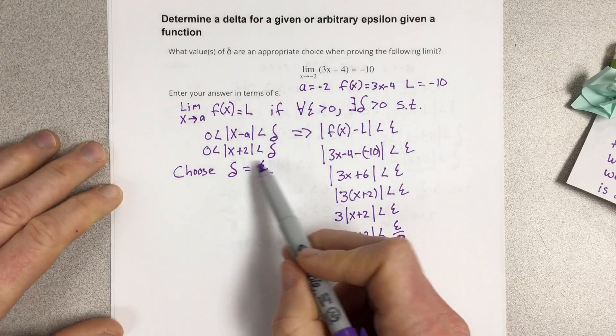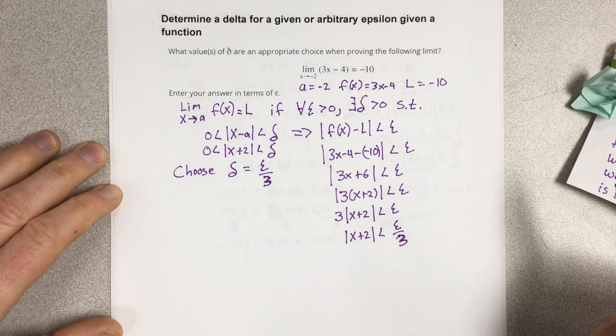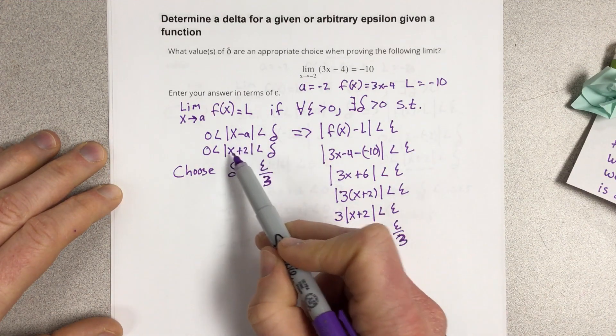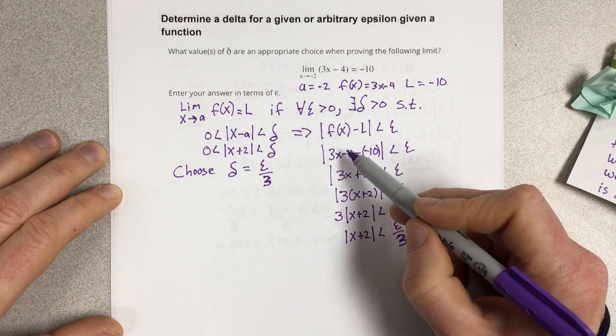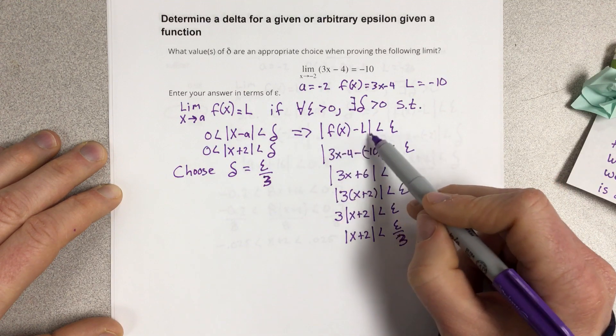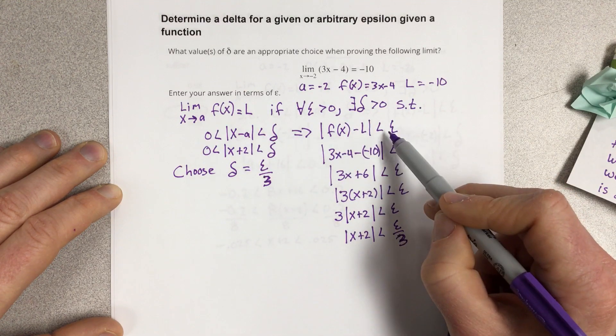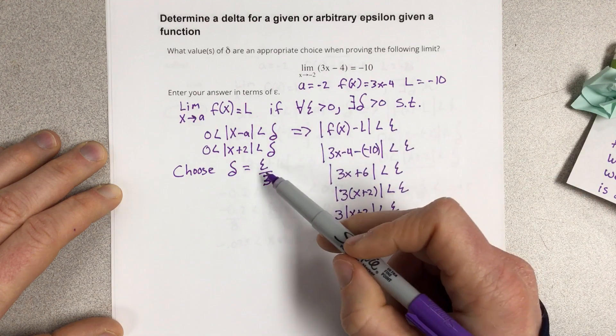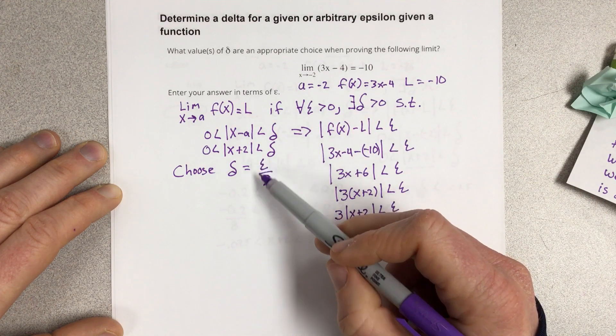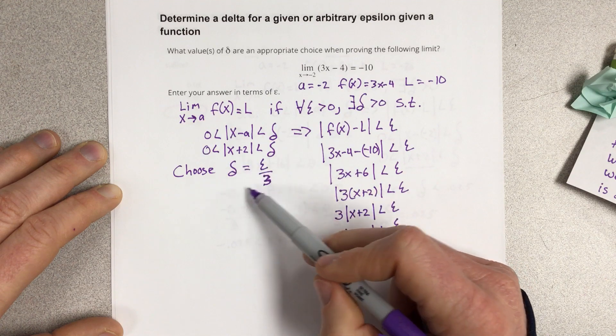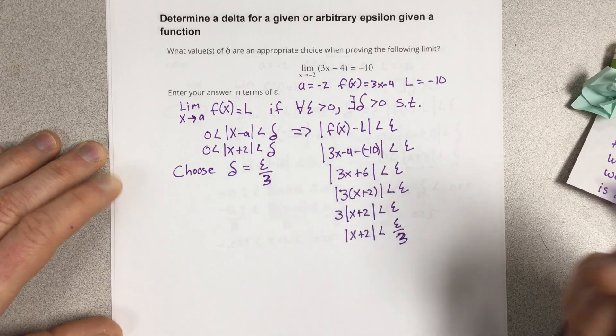Now, we would do that, choose epsilon divided by 3, and then we would start with this piece and work our way backwards to see if we would end up with our f(x) minus L being less than epsilon. And in this case, and in every case, it works out that way. So this is the value for delta that we would choose.